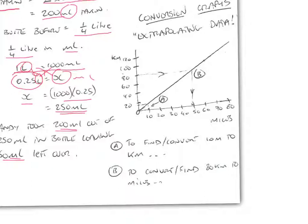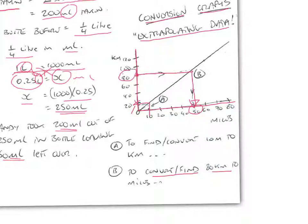Finally, we can use graphs to perform conversions by extrapolating data. Here's a graph relating kilometres to miles. To convert 10 miles to kilometres, go out to 10 miles, up to the graph, then read across to get the value in kilometres. To convert 80 kilometres to miles, go up to 80 kilometres, across to the graph, and down to the miles axis to read the equivalent value. This process is called extrapolating data.